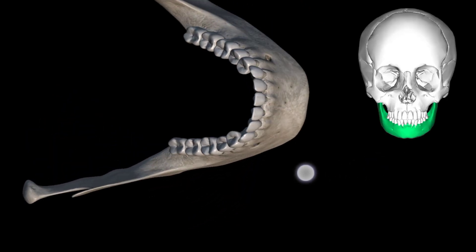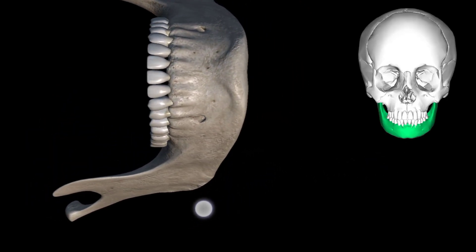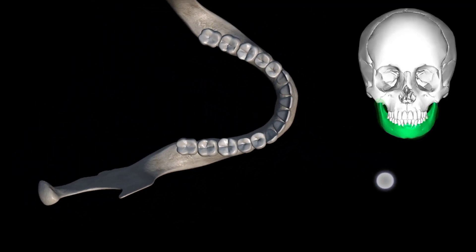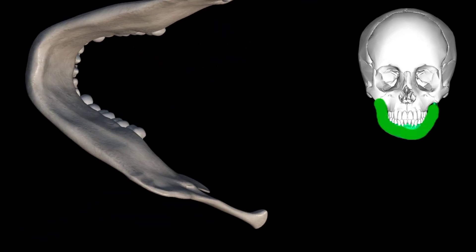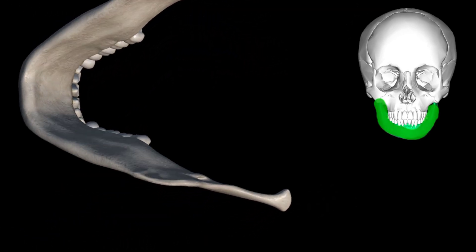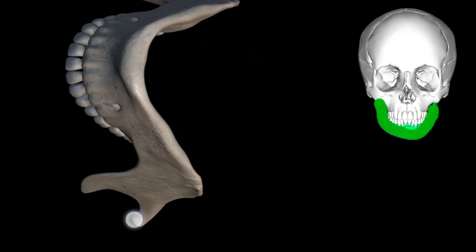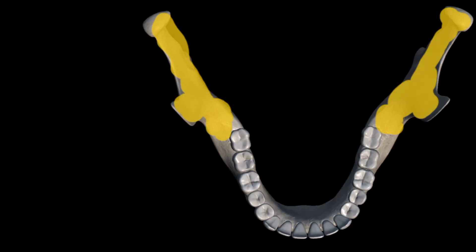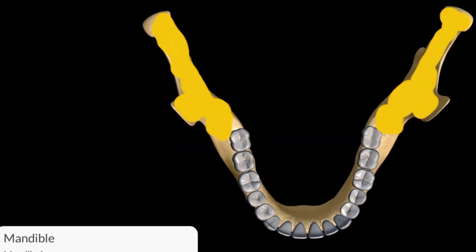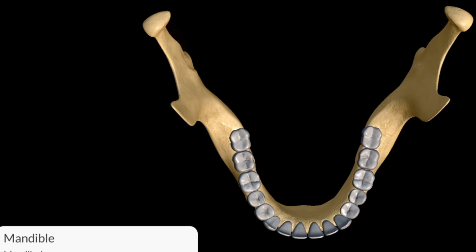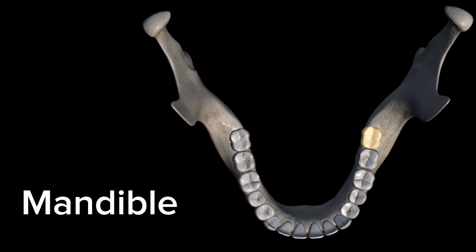The largest and strongest bone in the face, forming the lower part of the jaw, acting as a receptacle for the lower teeth. It is also the only movable bone in the skull. The U-shaped bone which is horizontal and acts as a receiver for the teeth of the lower jaw — this bone is the mandible.